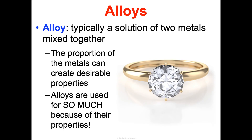Alloys are used for so much because of their properties. Pictured here: a pure 24-carat gold ring is often too soft to use in jewelry, but a 14-carat gold ring — an alloy of gold usually with silver and sometimes copper — is actually much stronger and more durable, so people often opt for that instead. We'll talk more about alloys when we get to our solutions unit later in the year. For now, we're going to do a little research activity to help you see how many alloys you interact with on a regular basis. That's all you need to know about metallic bonds — not too bad!